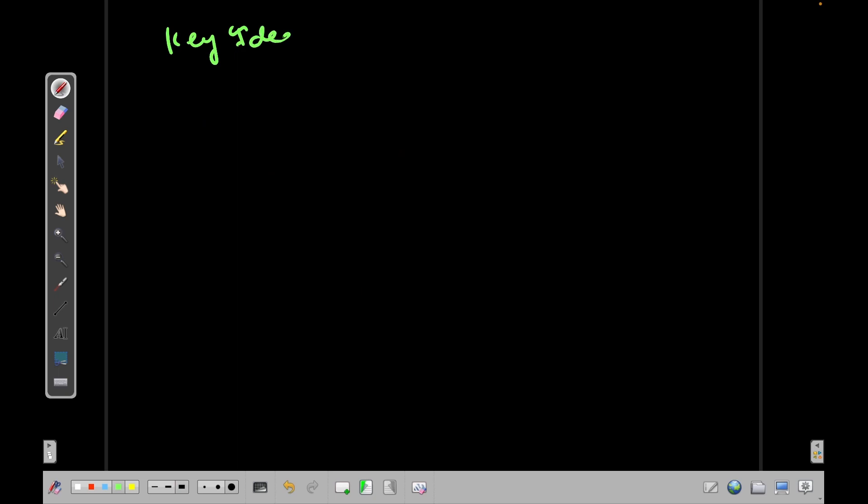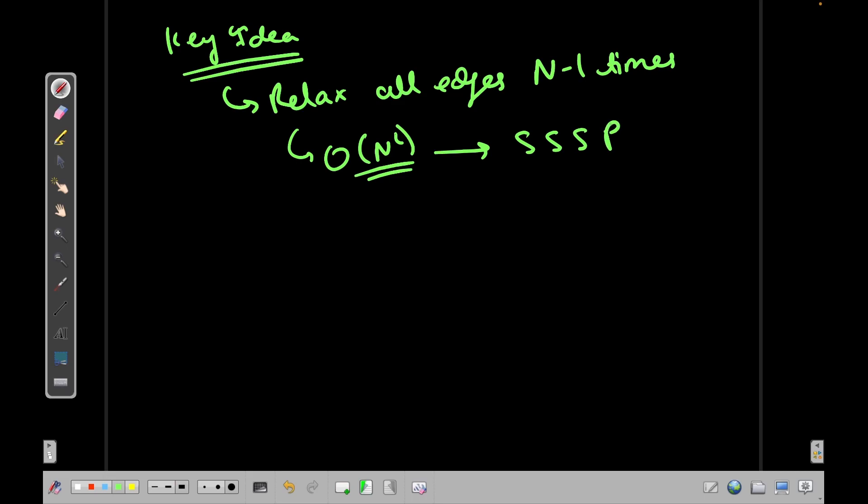the key idea is relax all edges n-1 times where n is the number of vertices. If you do that it guarantees that when I do it at most n-1 times, that is why the runtime is O(n²). And if I do that, then I will get the single source shortest path from the source vertex to every other vertex.